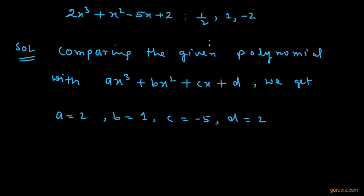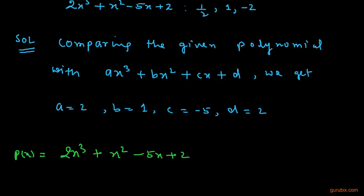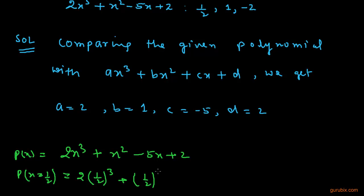Now we shall verify that the numbers 1/2, 1, and -2 are the zeros of the given polynomial. The given polynomial is p(x) = 2x³ + x² - 5x + 2. We shall check it for x = 1/2: p(1/2) = 2 × (1/2)³ + (1/2)² - 5 × (1/2) + 2.